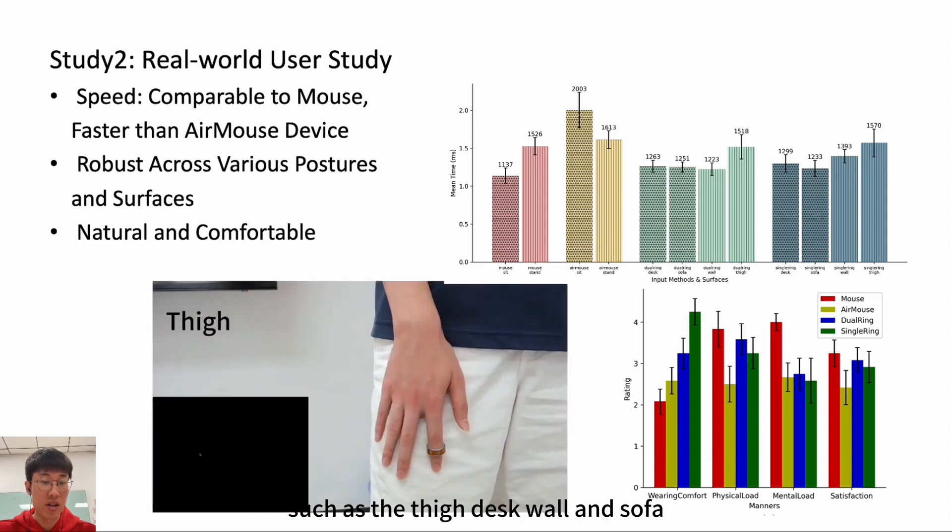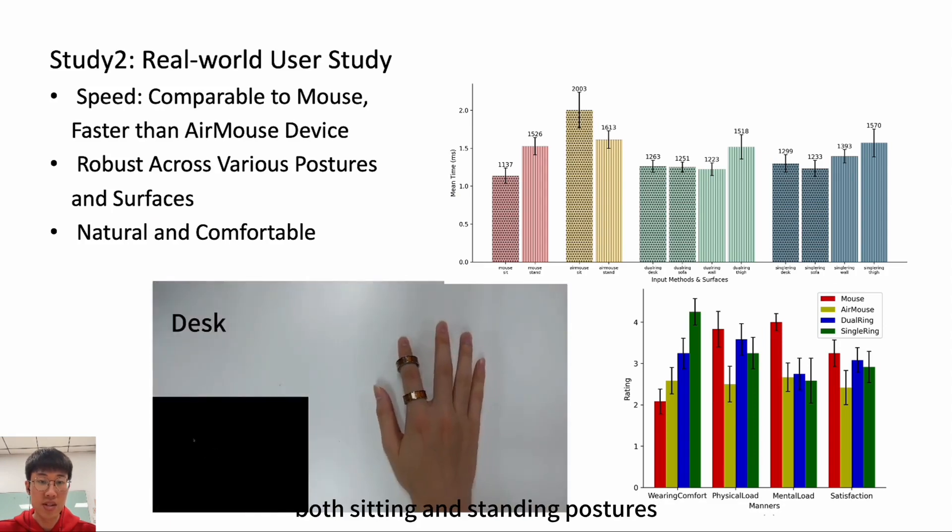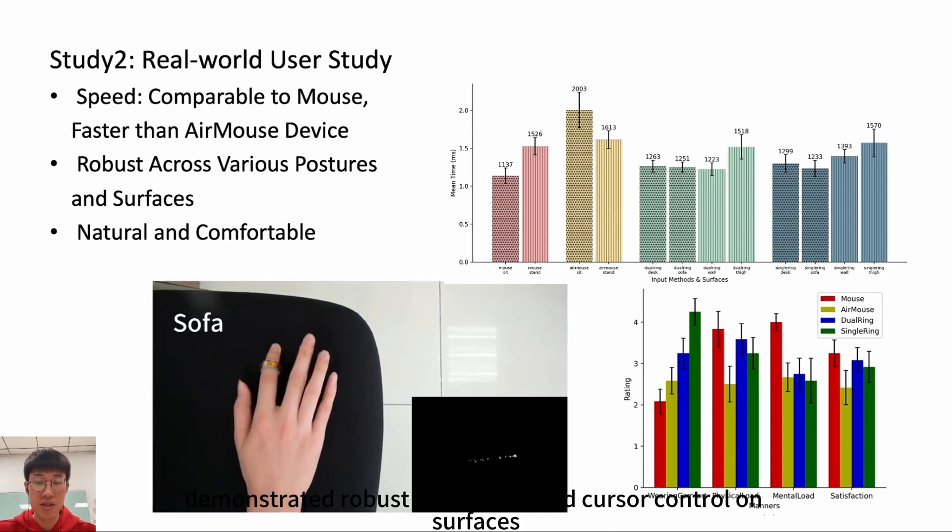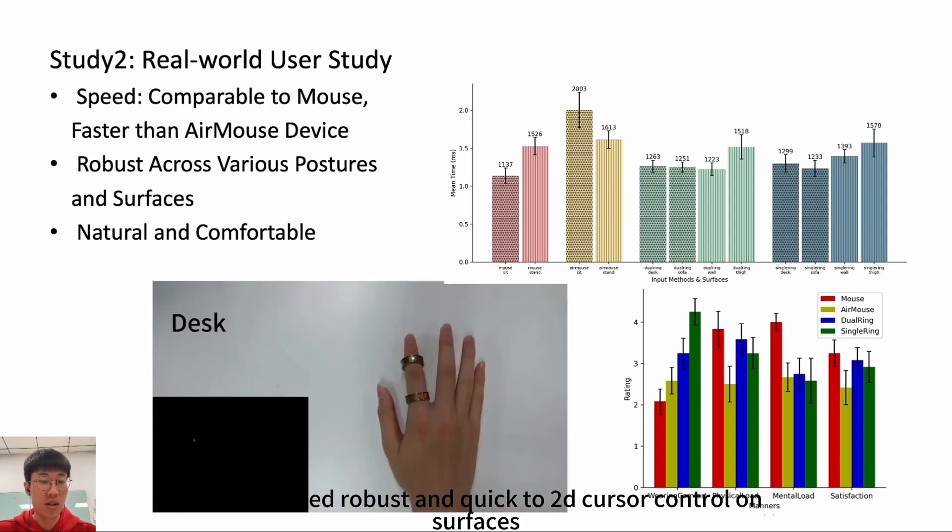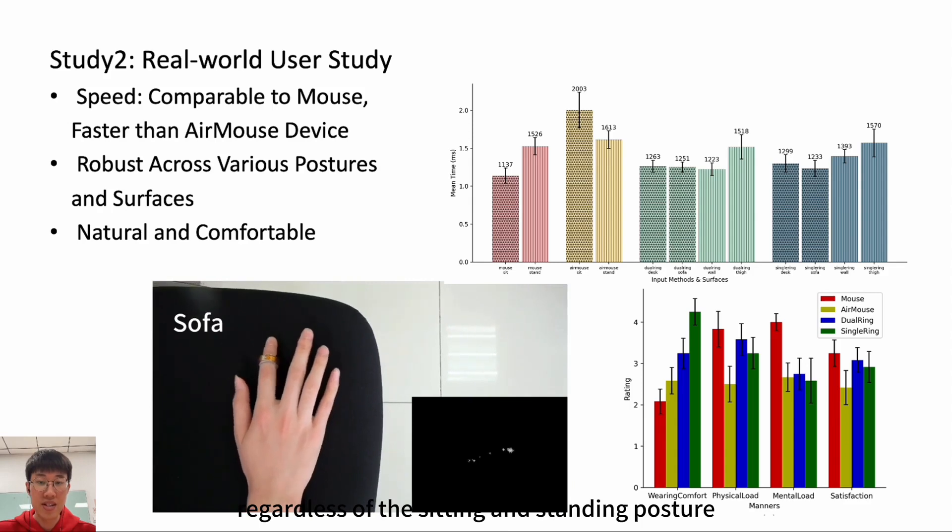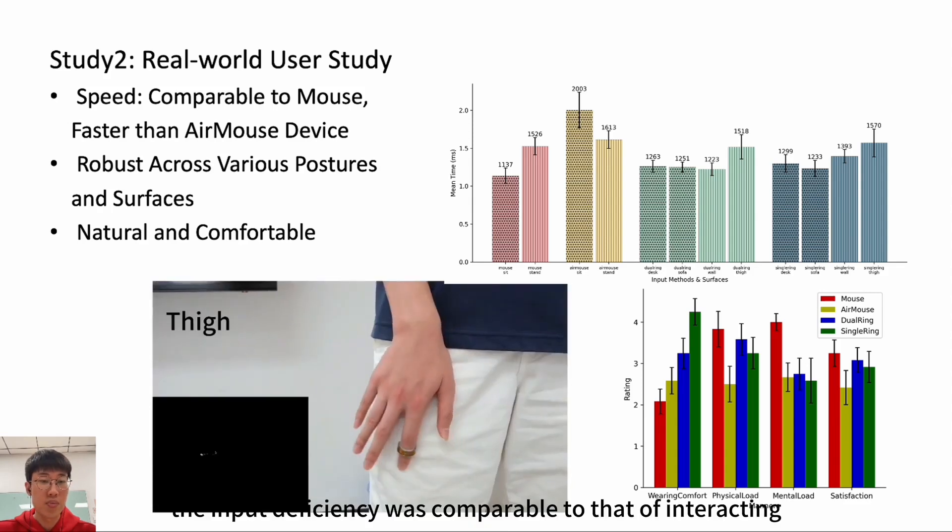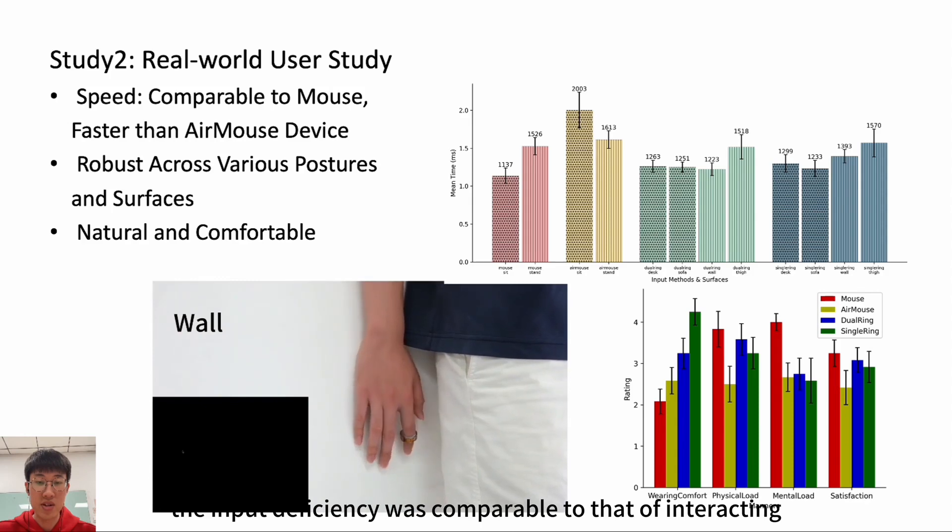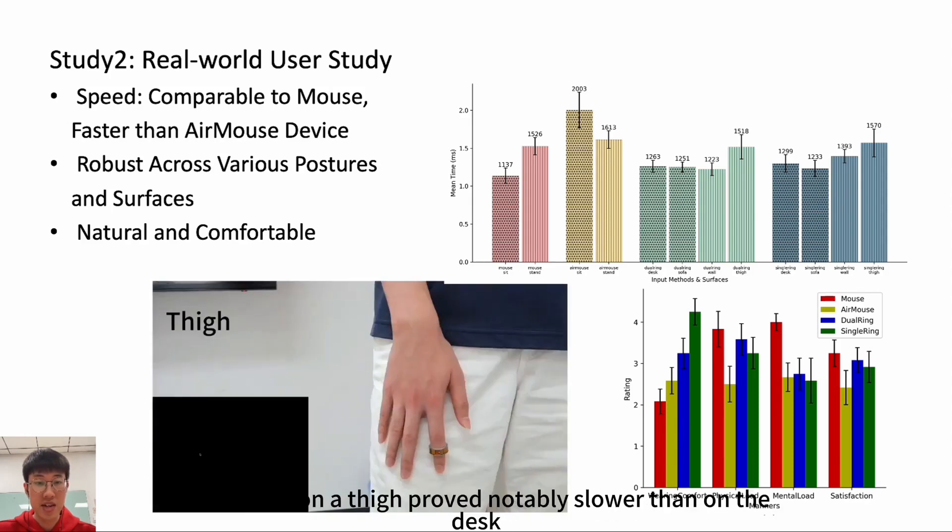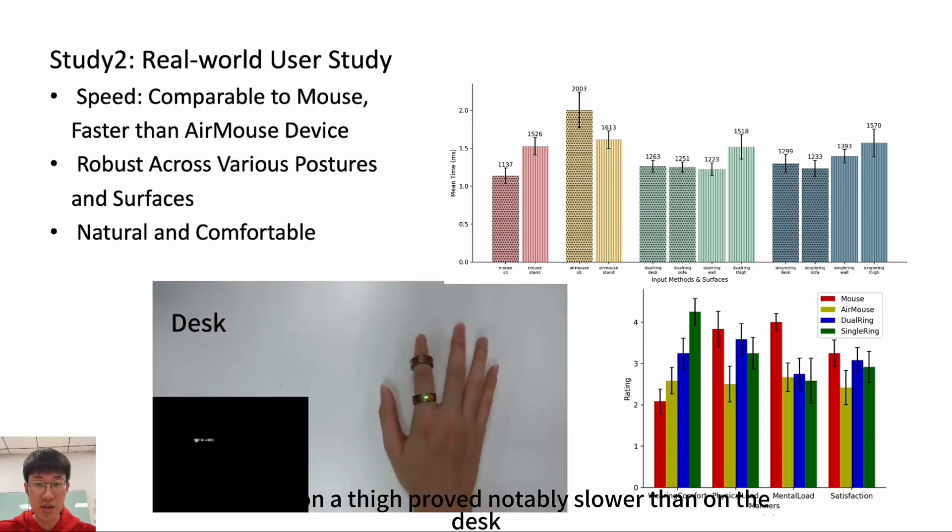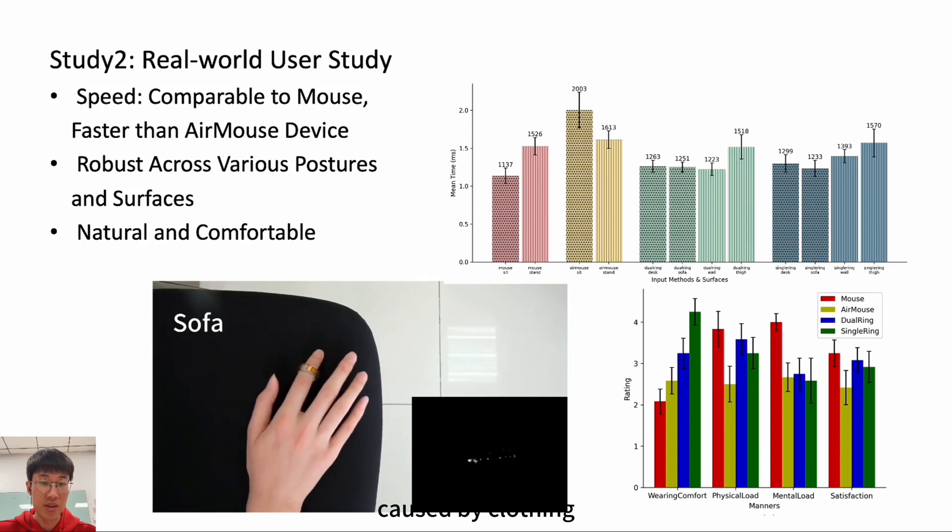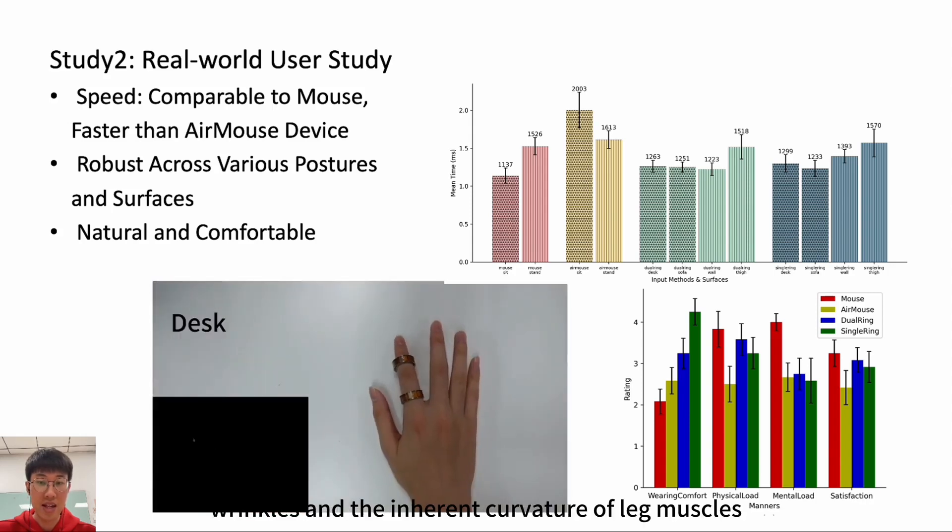In a real-world large screen interaction task, we conducted tests to evaluate the performance of MouseRing on surfaces such as the thigh, desk, wall, and sofa, where participants adopted both sitting and standing postures. Both single and dual MouseRing demonstrated robust and quick 2D cursor control on surfaces with varying hardness and flatness, regardless of the sitting and standing posture. The input efficiency was comparable to that of interacting while seated at a desk. However, interaction on a thigh proved notably slower than on a desk, primarily due to irregularities caused by clothing wrinkles and the inherent curvature of leg muscles.